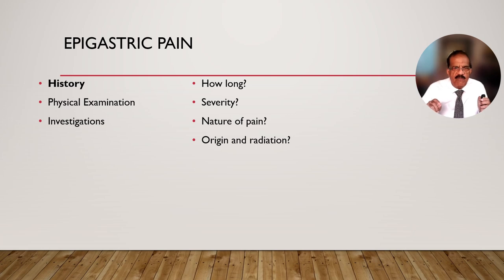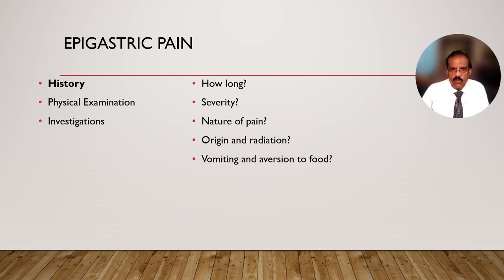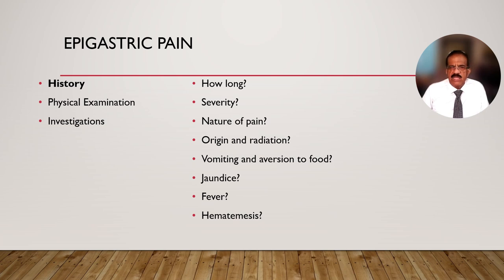This is an important point to emphasize: pain arising from the gallbladder is usually in the epigastrium first, and only after the gallbladder becomes inflamed is the pain and tenderness localized to the right hypochondrium. Ask about vomiting or aversion to food — both are symptoms related to epigastric pain. Jaundice would be highly suggestive of biliary tract disease or pancreatic pathology. Also ask about fever and hematemesis.